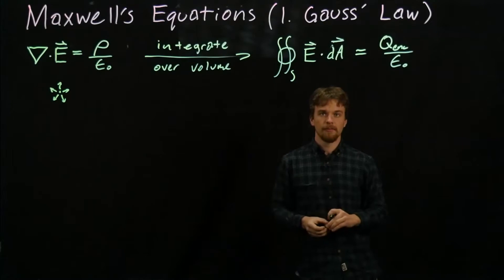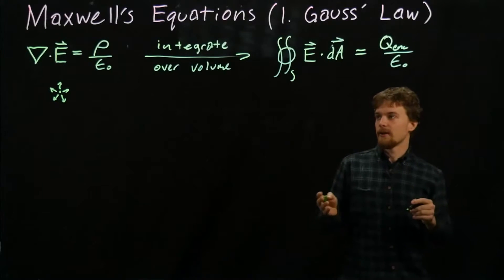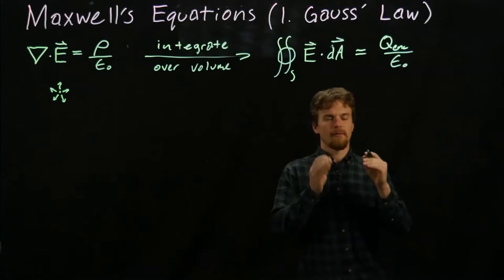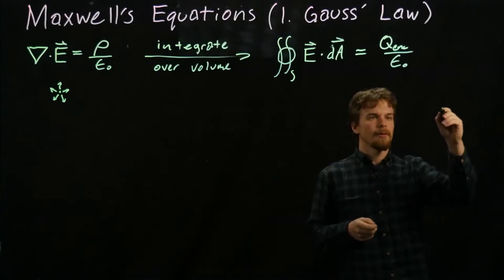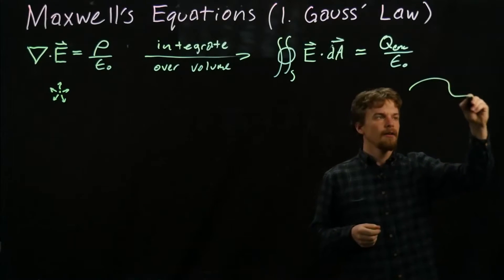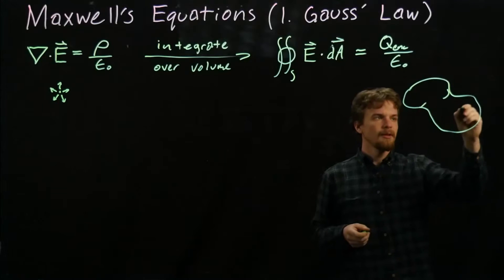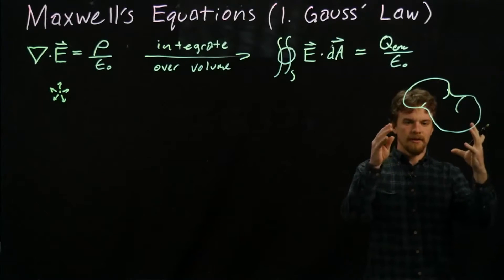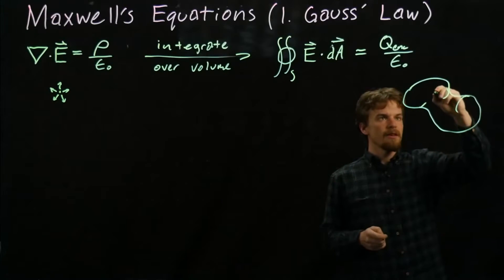This form of the equation is really the same equation, but this one's a little more intuitive. We can draw some pictures and understand what it means. If we have some arbitrary shape, this is a three-dimensional closed surface.